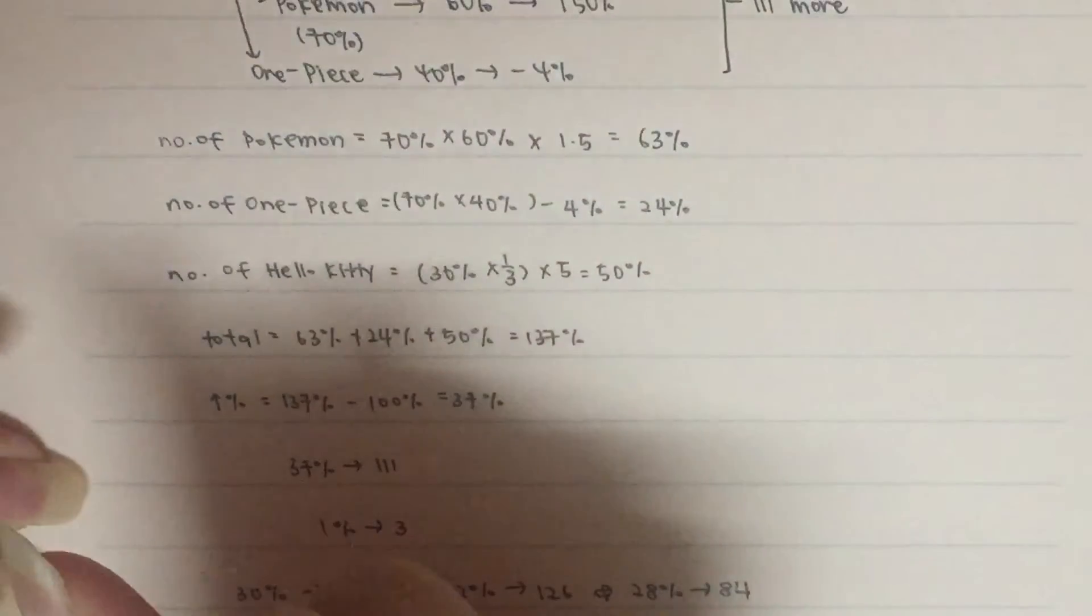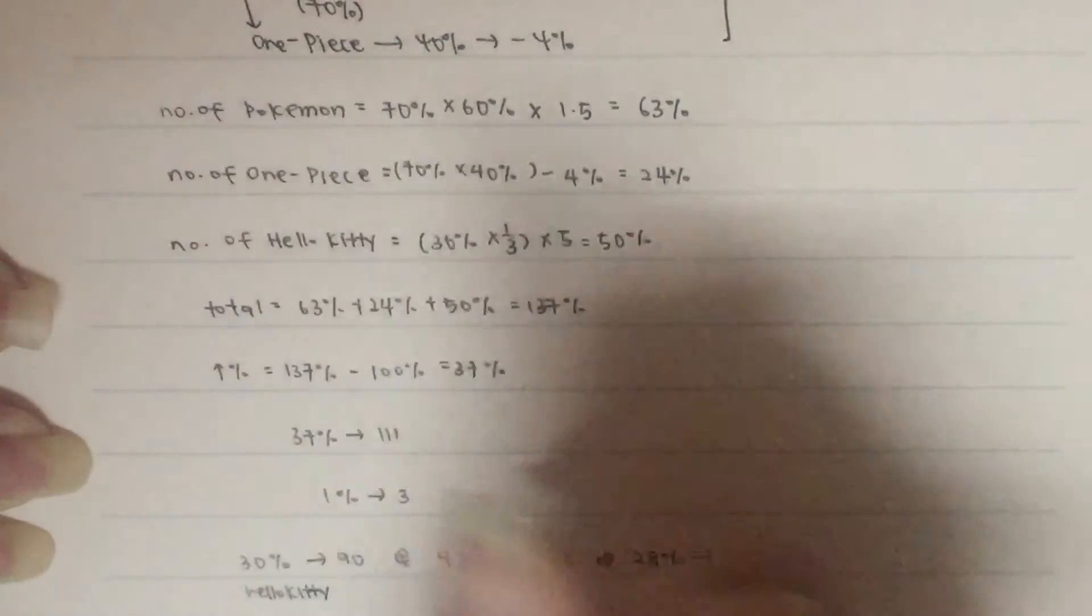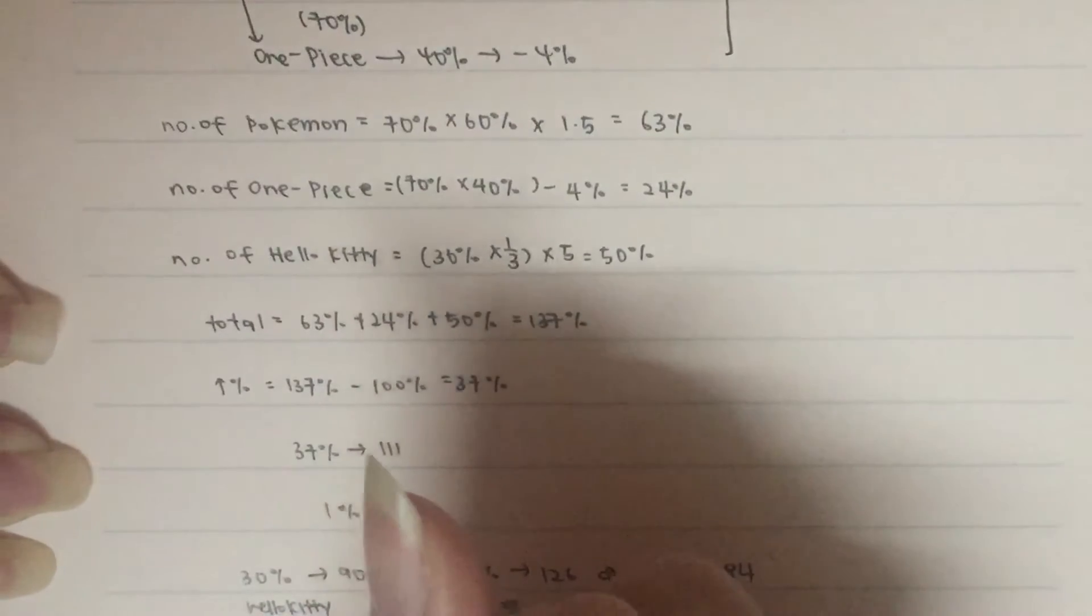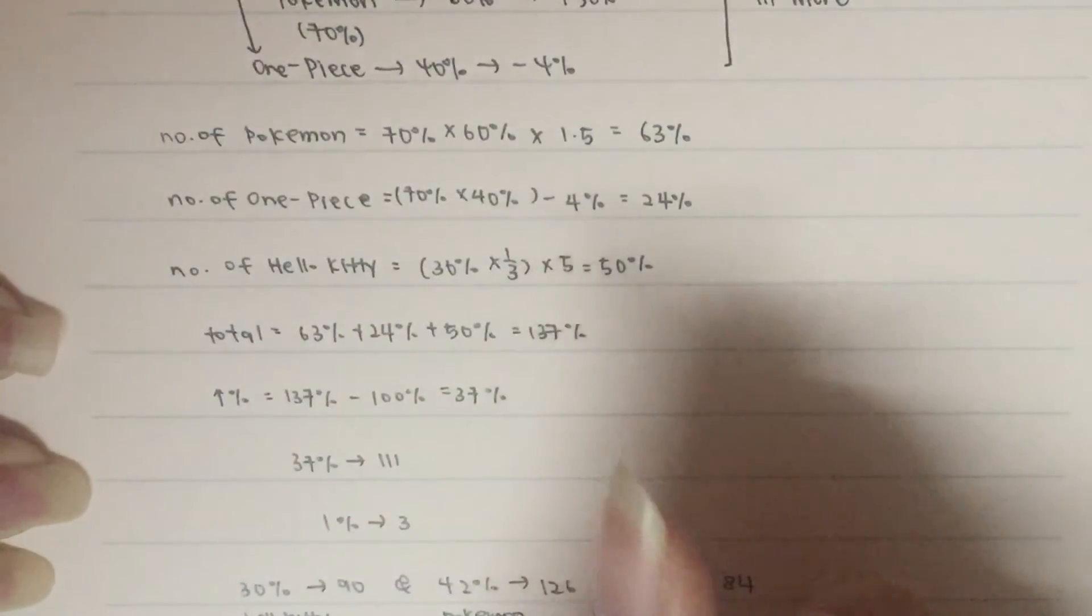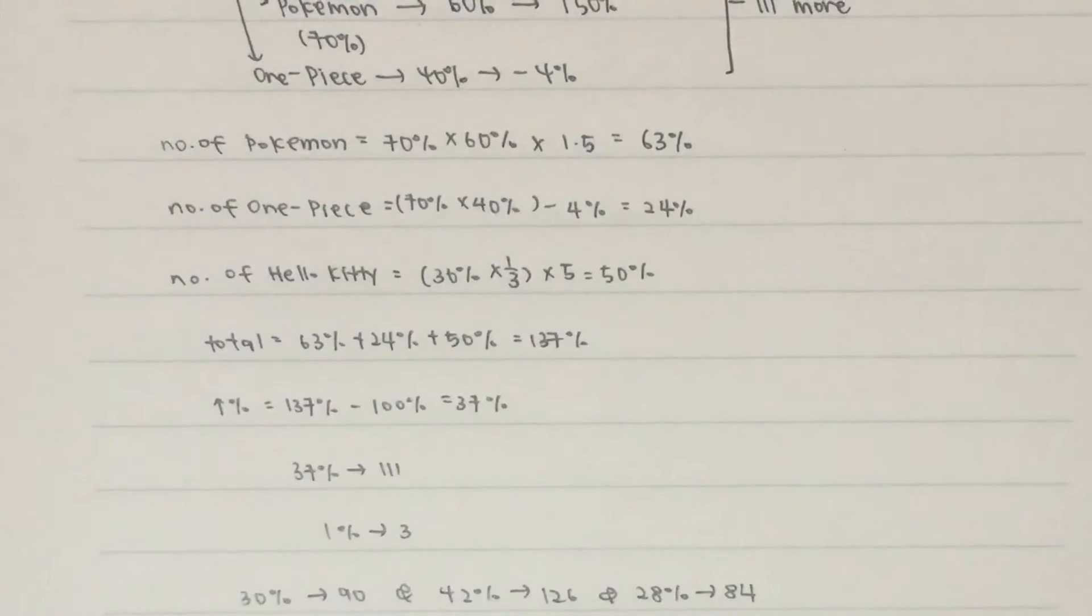This is Hello Kitty, 42% of it for Pokemon, and this would be for One Piece. Yeah, that's the answer for question 3.